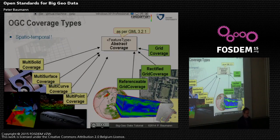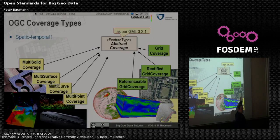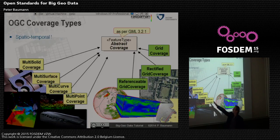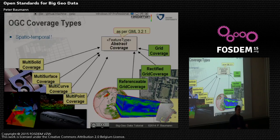We need this flexibility because the coverage types we have are quite diverse. Typically we think about pixels and quadratic pixels — something like ortho images. But first of all, this can be spatiotemporal; we might have irregular grids, or very strange grids like those used in climate modeling. We also have point clouds called multipoint coverages, trajectories, surfaces, and solid bundles. This is where we close the gap to geometric modeling like CityGML. So this is not about reinventing the wheel, but about making connections.